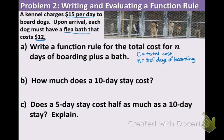Now that we have our variables defined, we are ready to form a function rule or an equation. We have the total cost is C. The total cost is determined by how many days that the dog is boarding, and it's $15 per day. So we're going to do 15 times N. And also, it has to have a one-time flea bath, so plus $12. So I'm just going to label it below: $15 per day, and then here's the one-time flea bath.